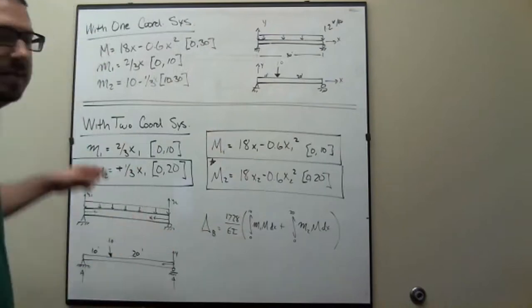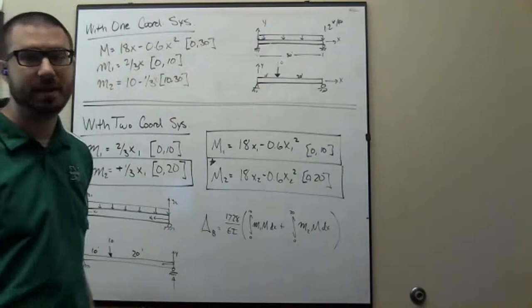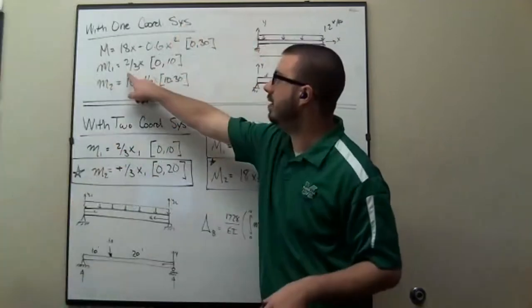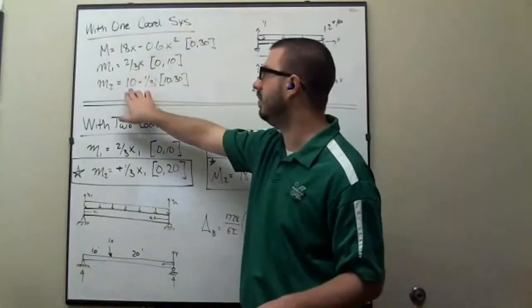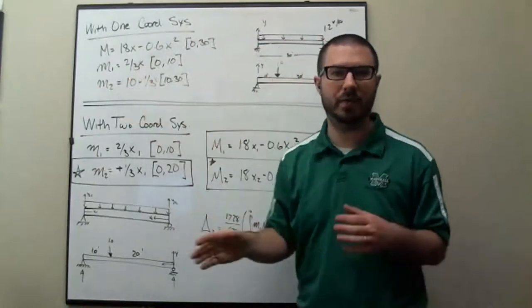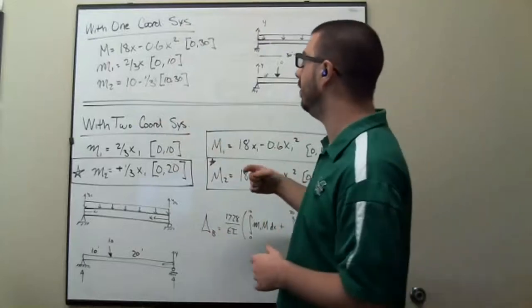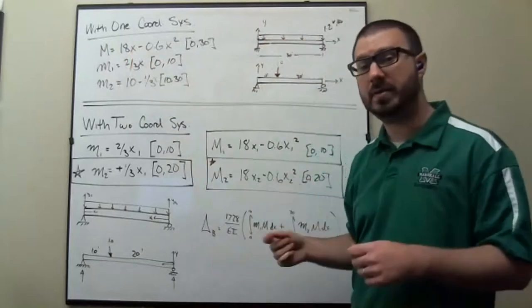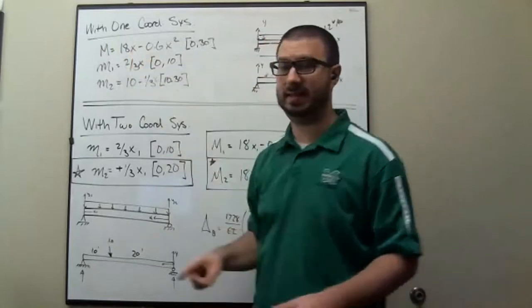So what we ended up getting was this. We got a real moment function that worked for the entire beam, but then we had two virtual moment functions. One was 2/3 X, the other was 10 minus 1/3 X, and so what that meant was when we evaluated the integrals we had one integral from 0 to 10 of this times this, but we had another integral from 10 to 30 of this times this.